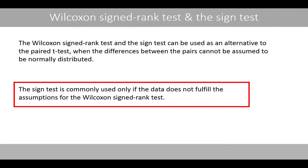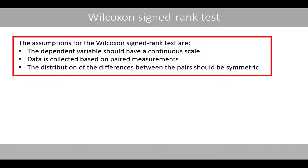The Sign Test is commonly used only if the data does not fulfill the assumptions for the Wilcoxon Signed-Rank test. The assumptions for the Wilcoxon Signed-Rank test are that the dependent variable should have a continuous scale, that the data is collected based on paired measurements, and that the distribution of the differences between the pairs should be symmetric.